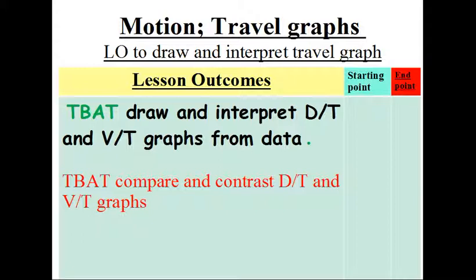This is a good point to mark your starting point. All you do here is choose: put a cross if you can't do any of the outcome, or a tick if you can do it, a tick with a question mark if it's 50-50, so that at the end point you can see where you started and how much progress you've made.